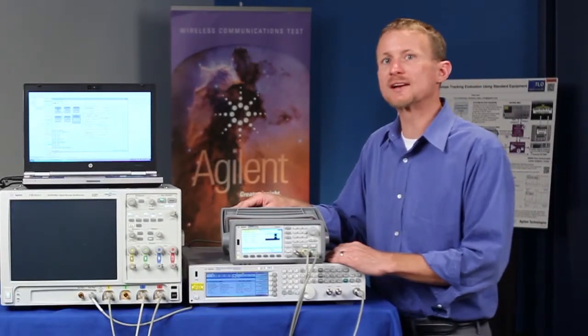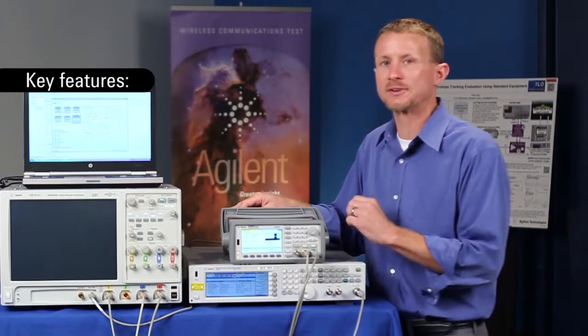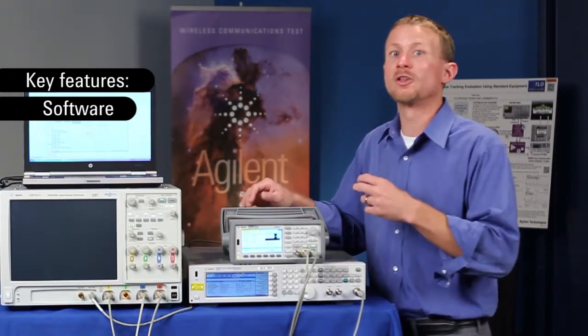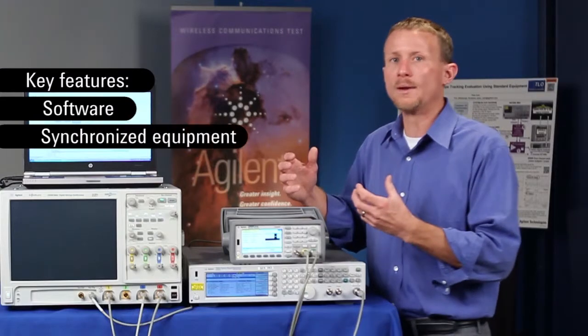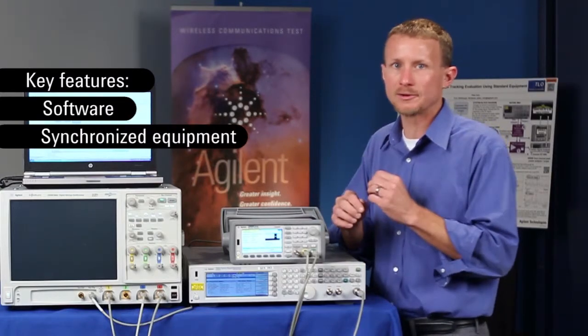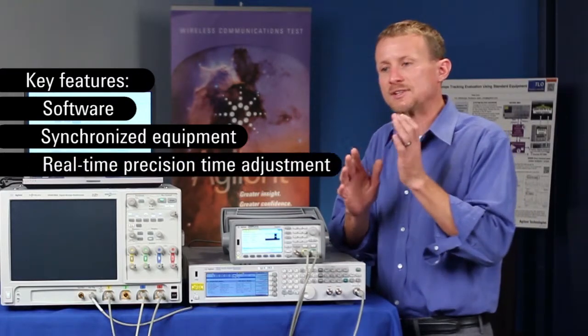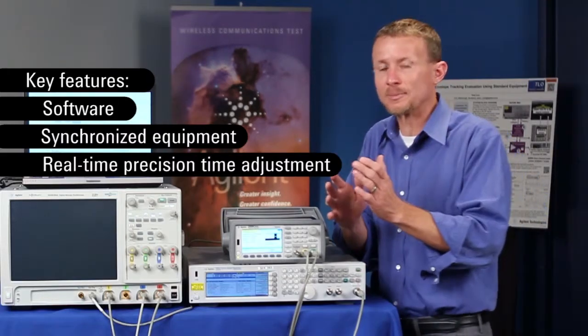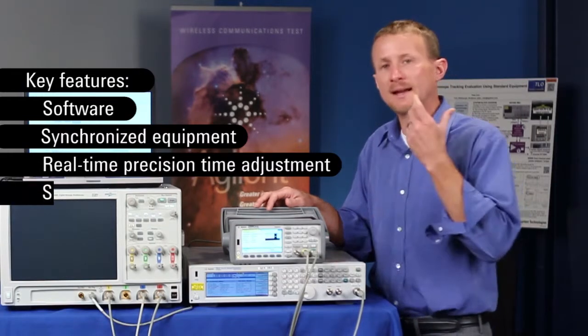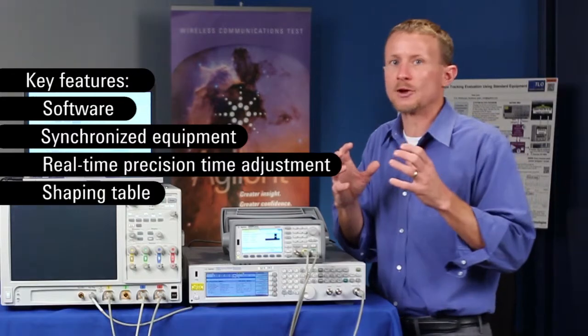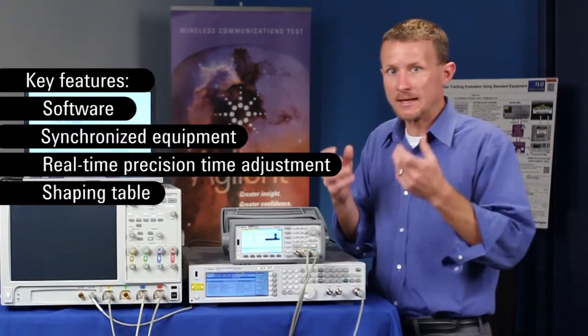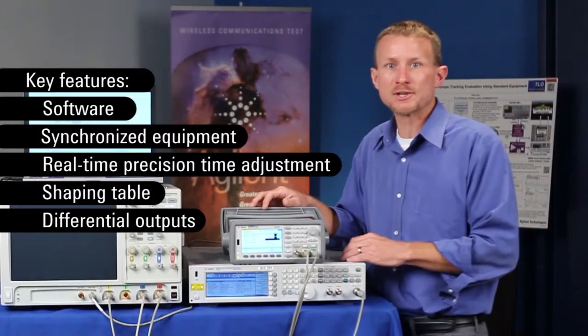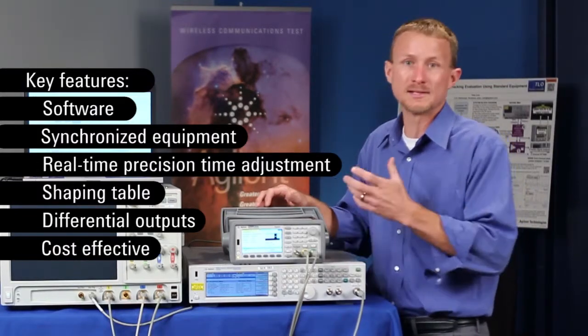Engineers in the industry have told us they require several key features for generating the required signals for testing envelope tracking power amplifiers. First of all, we need software that's going to generate the RF signal along with the envelope of that signal. We need synchronized equipment that will maintain synchronization even between power cycles. We'd also like real-time precision time adjustment of the time alignment between the RF signal and the envelope as this greatly influences the overall system performance. We'd like a shaping table where we can tailor the envelope for better operating efficiency, better linearity, and even better operating bandwidth. We'd like differential outputs for the envelope for better noise rejection. And the solution needs to be cost effective where we can reuse the existing equipment that we have.